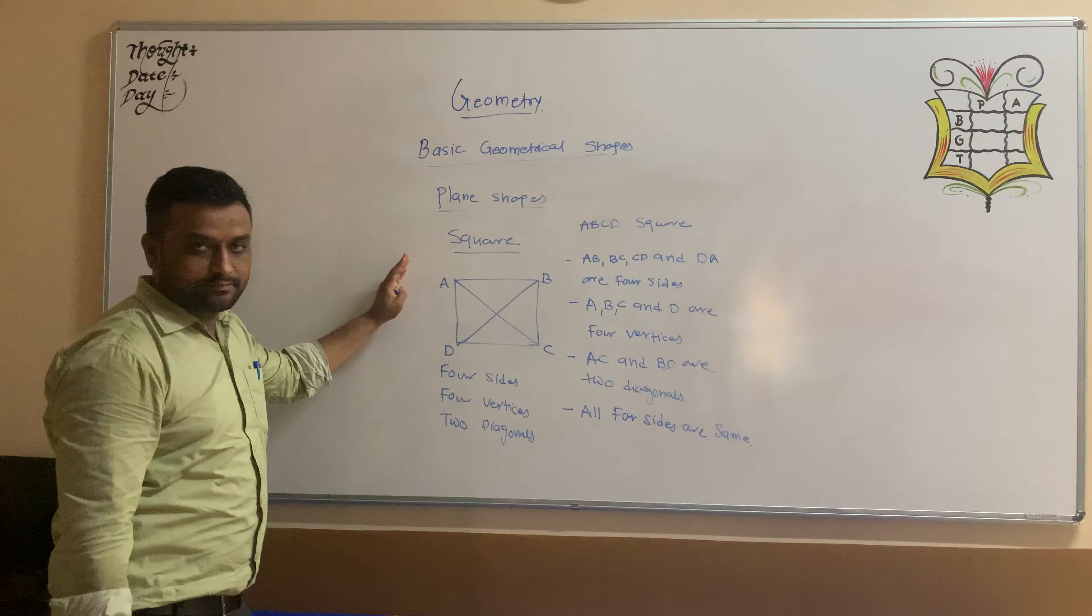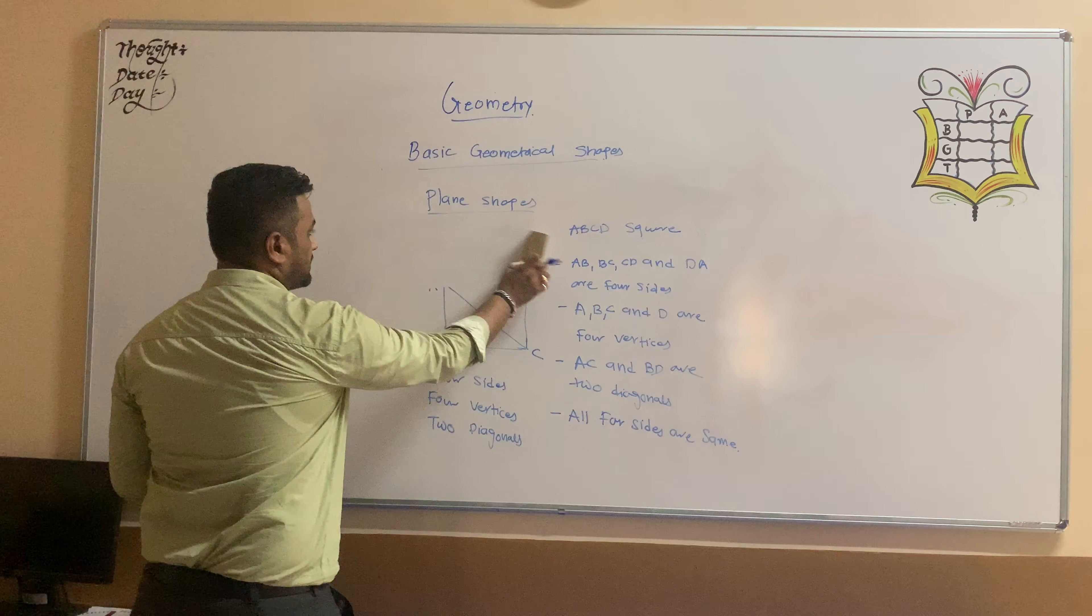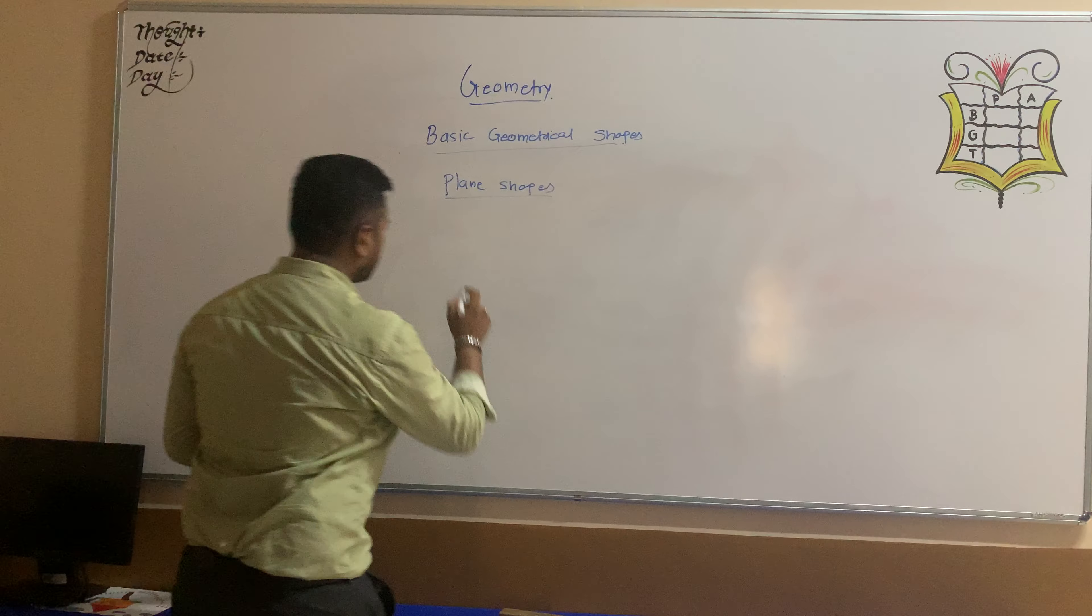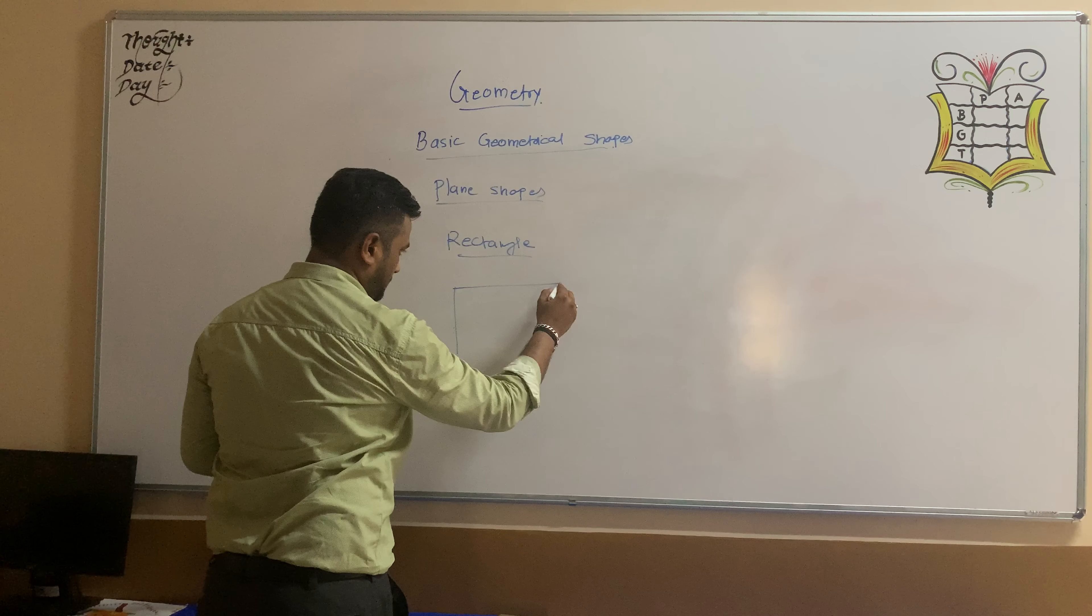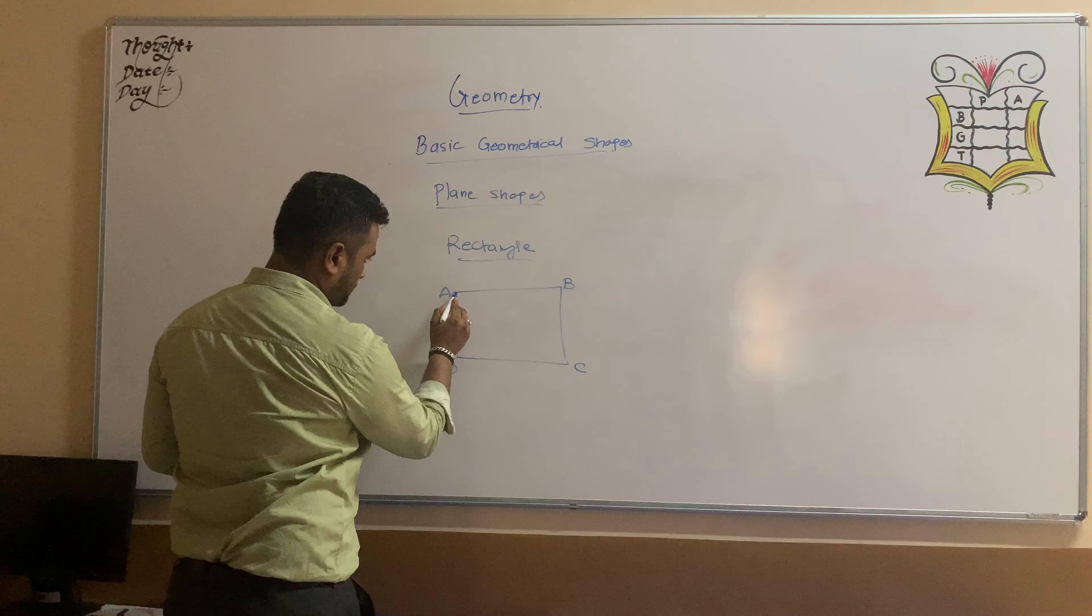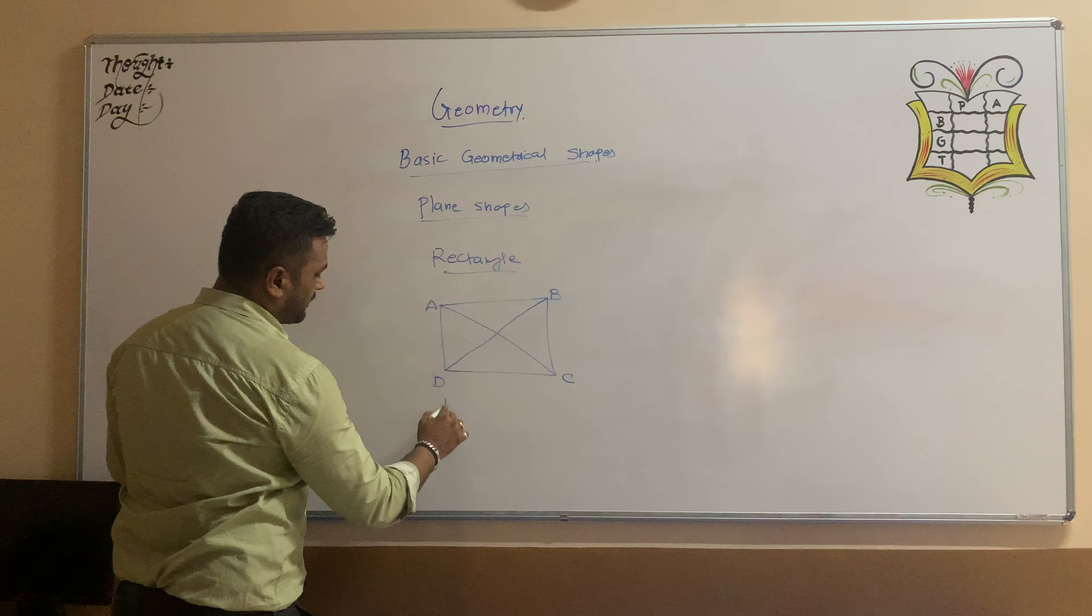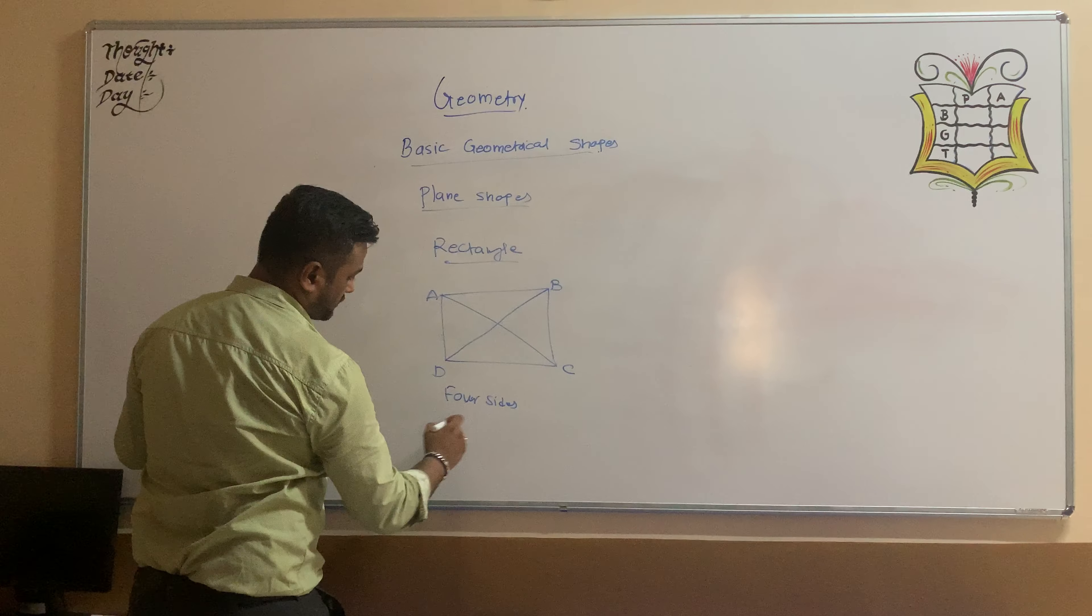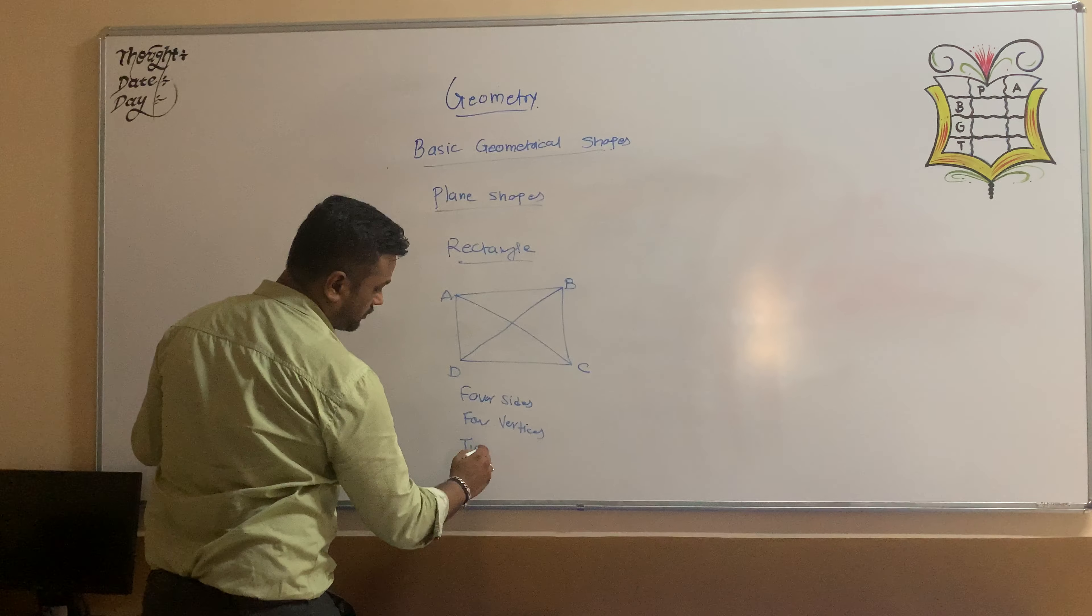This is the first plane set as a square. Now, second plane set we will learn is rectangle. So in rectangle, ABCD is your rectangle. Rectangle is also having four sides, four vertices and two diagonals.